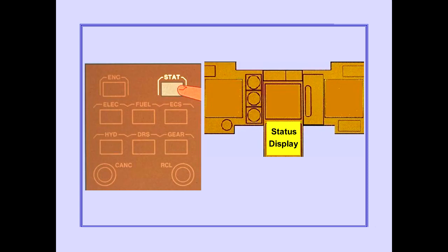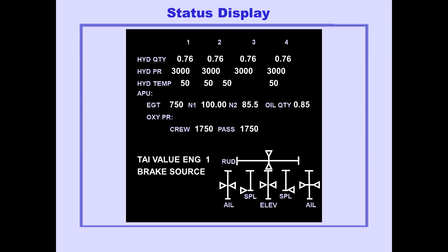Pushing the status display switch normally causes the status display to appear on the lower CRT. The status display shows airplane systems information. The information is also used with the dispatch deviation guide or airline equivalent to determine the airplane's readiness for dispatch and whether dispatch relief is available.